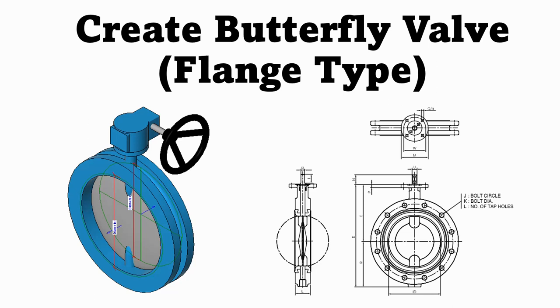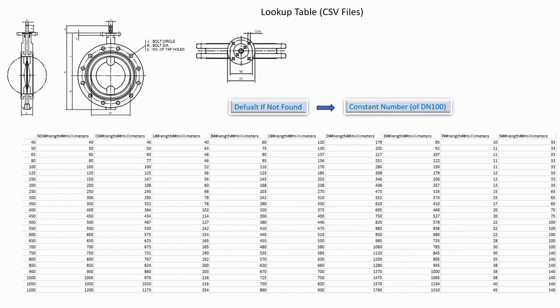In this video, I will use and load in the created valve actuator gearbox family, which is parameter-controlled by a lookup table. This is a lookup table CSV file. Its data are referred from the manufacturer specifications. I will use this lookup table CSV file to create the parametric family.